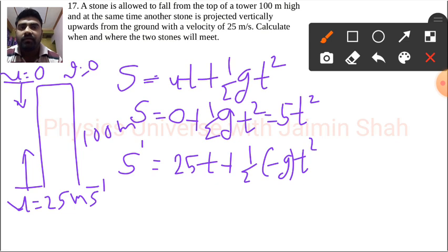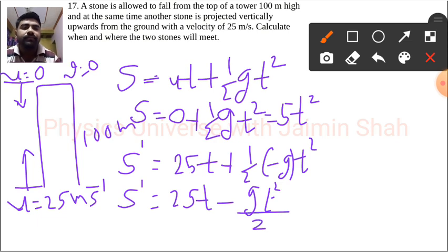So t squared, because wherever they meet they took the same time, so t is constant here. S dash becomes 25t minus gt squared by 2.